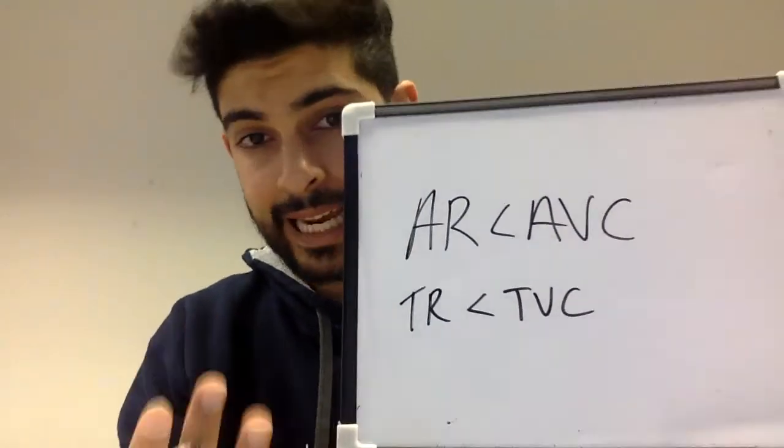Next: the shutdown condition. The rule is: if AR is less than AVC, the firm should shut down immediately. To understand why, it helps to convert to totals: if total revenue (TR) is less than total variable cost (TVC), the firm should leave the market. Let's use example numbers: TR = 220, TVC = 200, TFC = 60. First, calculate profit: TR minus TC. Total cost is 200 + 60 = 260. So profit = 220 − 260 = −40. The firm is making a loss of £40.